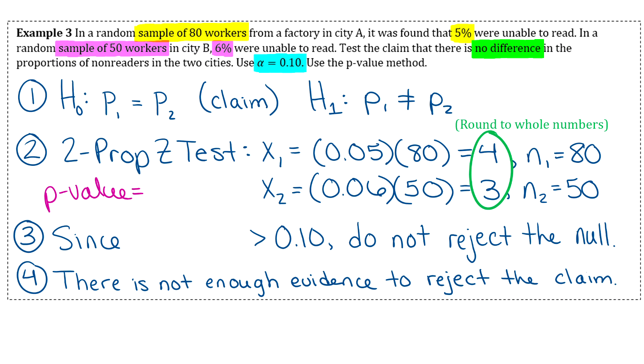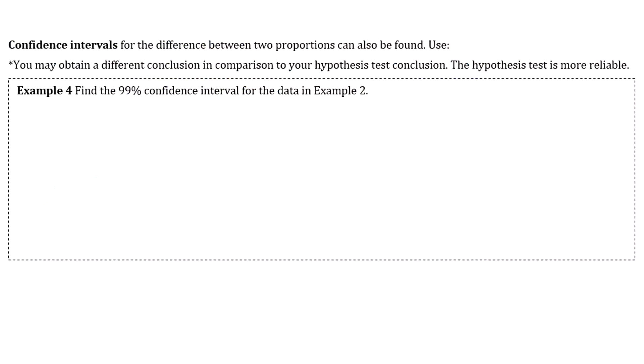We have one more thing to talk about quickly, and that's confidence intervals for the difference between two proportions. To do that you're going to go to two prop Z int, so two proportion Z interval. Example 4 says find the 99% confidence interval for the data from example two.